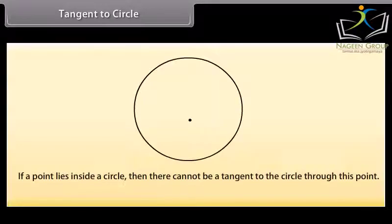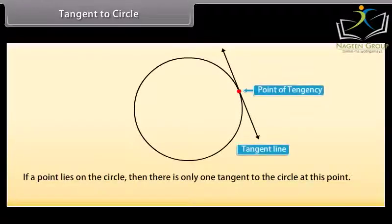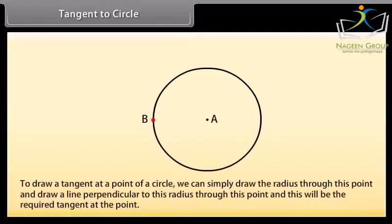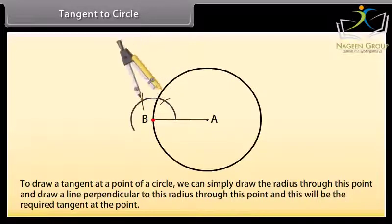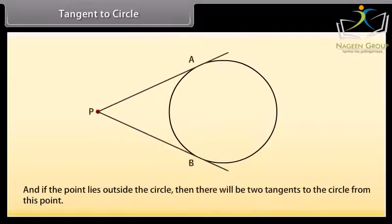Tangent to a circle: We know that if a point lies inside a circle, then there cannot be a tangent to the circle through this point. If a point lies on the circle, then there is only one tangent to the circle at this point. The tangent is perpendicular to the radius through this point. Therefore, to draw a tangent at a point of a circle, we can simply draw the radius through this point and draw a line perpendicular to this radius through this point — and this will be the required tangent. And if the point lies outside the circle, then there will be two tangents to the circle from this point.